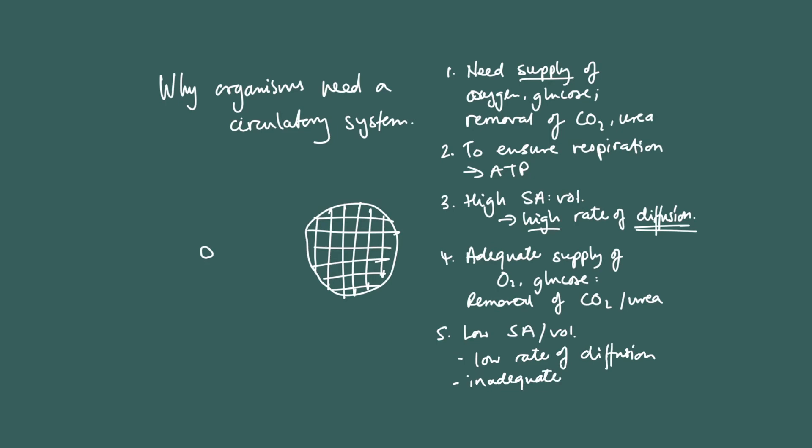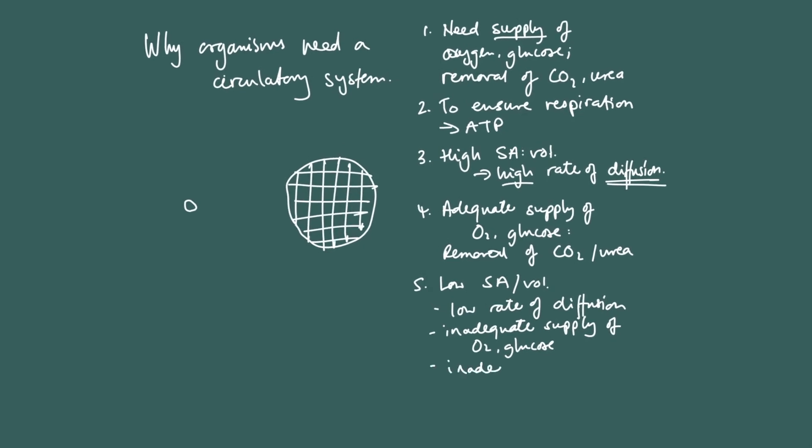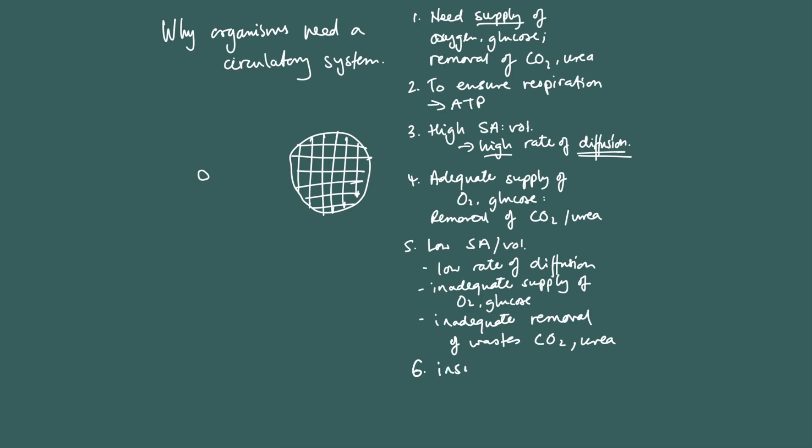There's an inadequate supply of oxygen, glucose, or other nutrients, and inadequate removal of wastes such as CO2 and urea. Because of that, the rate of respiration is low, insufficient to maintain the survival of the organism. There's an insufficient rate of respiration for cells to function.